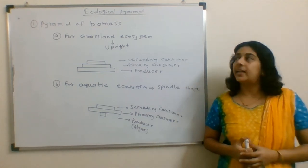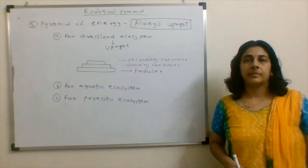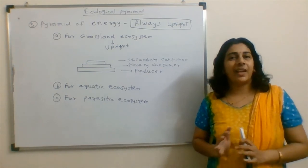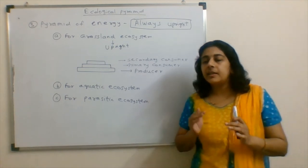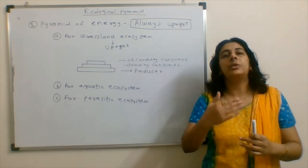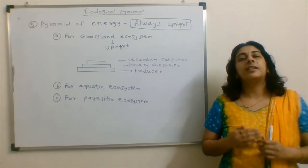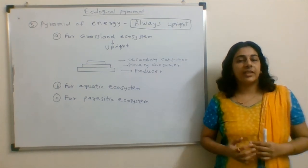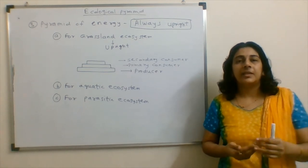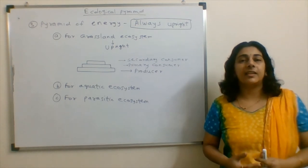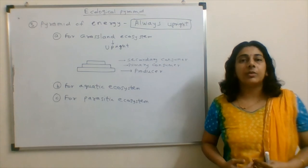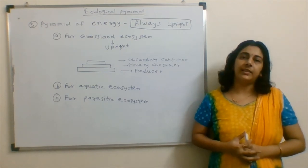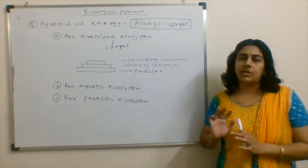Now coming to the third type, which is the pyramid of energy. When we say pyramid of energy, it's always upright. Remember this, pyramid of energy in any ecosystem is always upright. There is a 10% energy transfer from one trophic level to another trophic level. Why is this so? Because once the organism has biomass, once the organism is depending on another trophic level, it has to utilize its energy in the form of heat, in the form of its own metabolism. So there is energy loss. And in this way, 10% is only transferred to the next trophic level. So this is the case with all types of ecosystems.